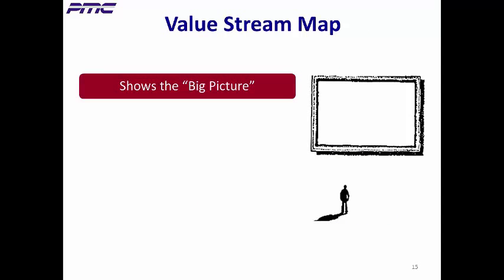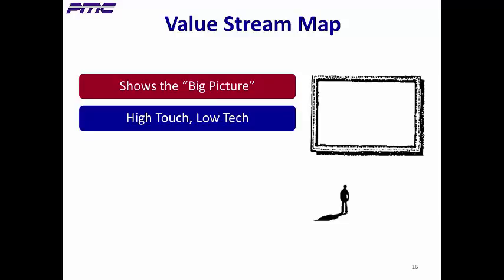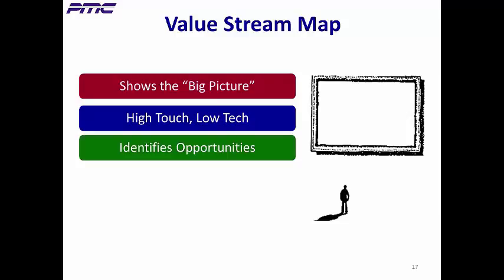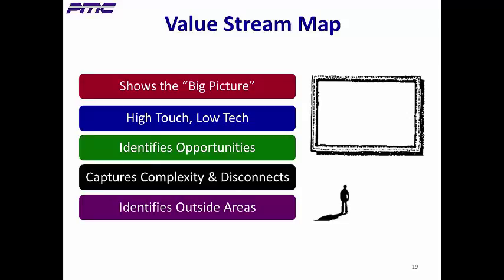There are many advantages of using value stream mapping. First, it focuses on the big picture and provides a great overview of your processes. It's also high touch, low tech — all you need is a large sheet of sturdy paper with lots of sticky notes and a team of key stakeholders who know their individual areas really well. It identifies opportunities like waste in the current state that lead to improvement opportunities. Most importantly, it captures the complexity and disconnects of key operational issues. Finally, it also analyzes the impact of outside entities on the value stream.